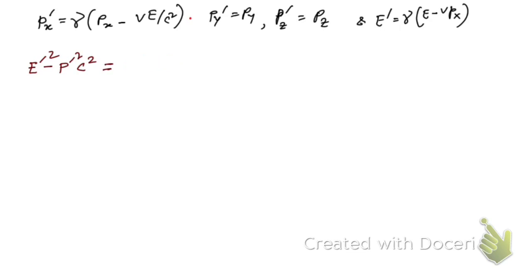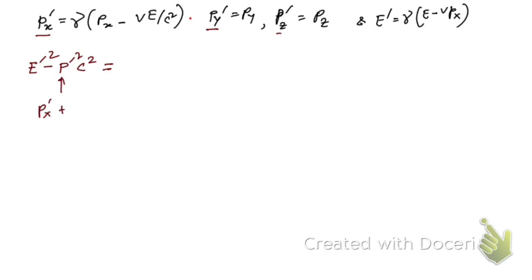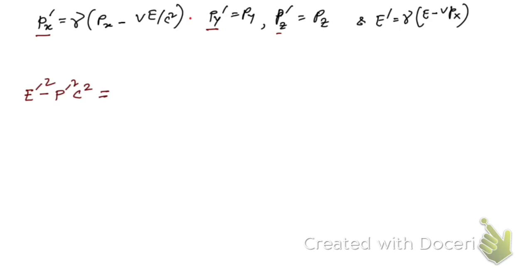Now, p-prime has three components: p_x-prime, p_y-prime, and p_z-prime. So p-prime squared equals p_x-prime squared plus p_y-prime squared plus p_z-prime squared.